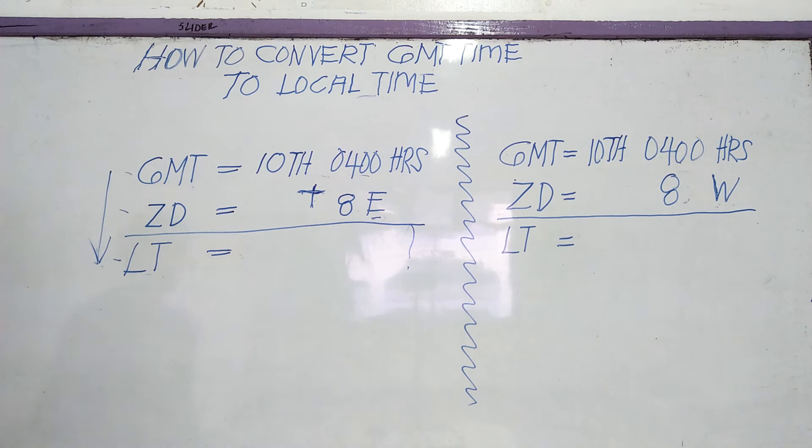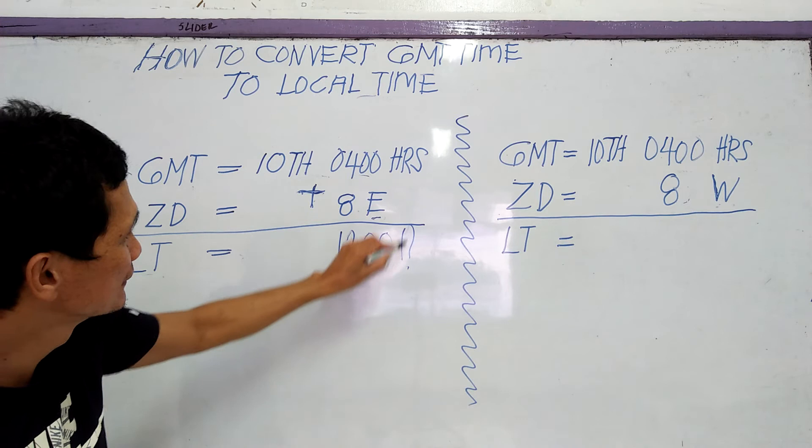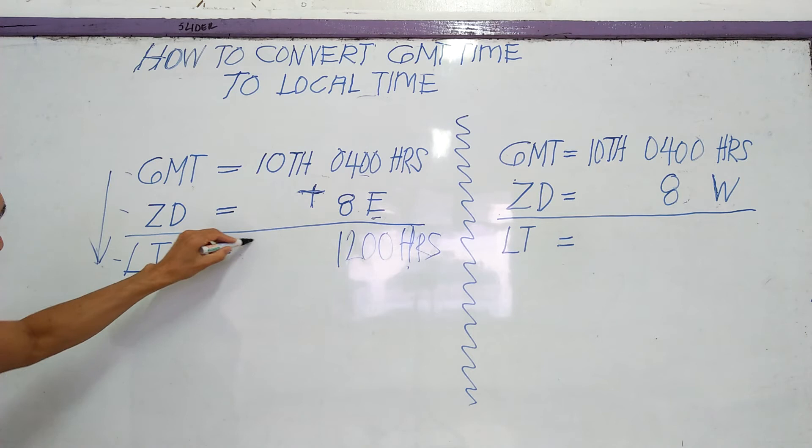So this is 4 plus 8, 12, 0, 0, 1200 hours. And bring down the 10th, the day.